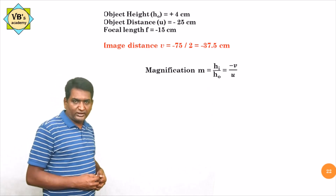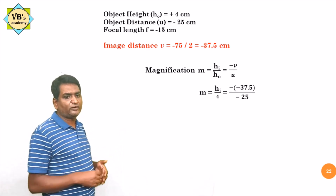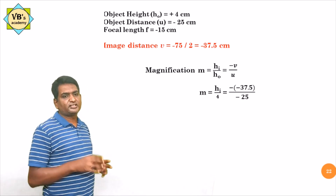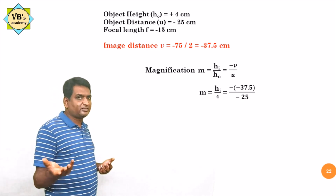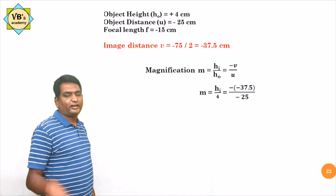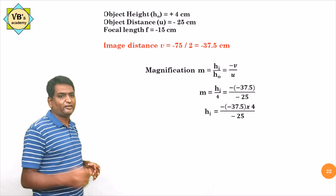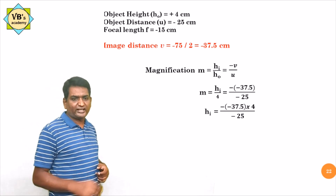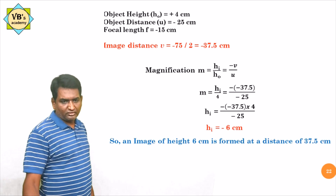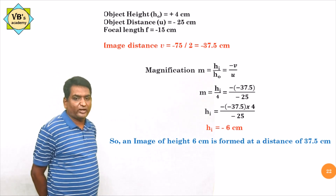Now find the image height using M = minus V/U = Hi/H0. With V = minus 37.5 and U = minus 25, after cross-multiplication, Hi = minus 6 centimeters. So image height is 6 centimeters, and it is formed at a distance of 37.5 centimeters from the mirror.